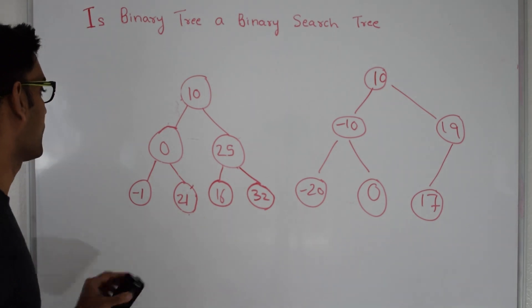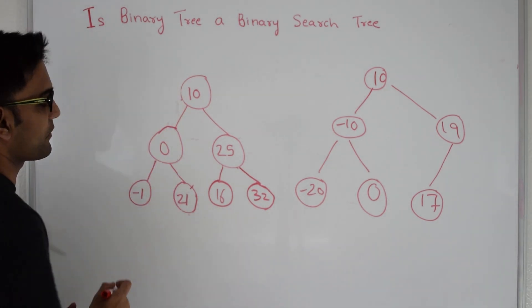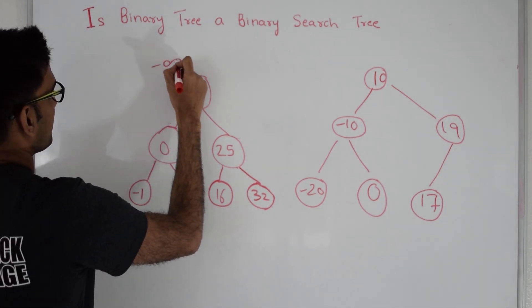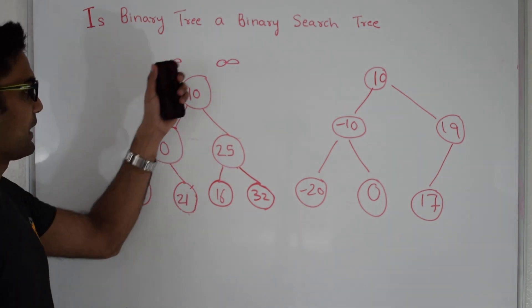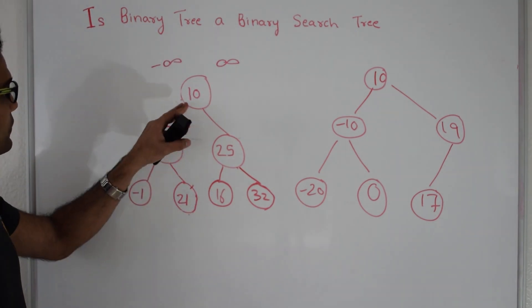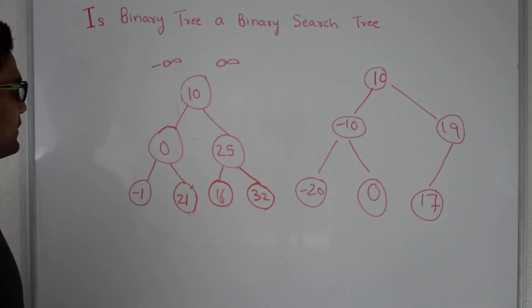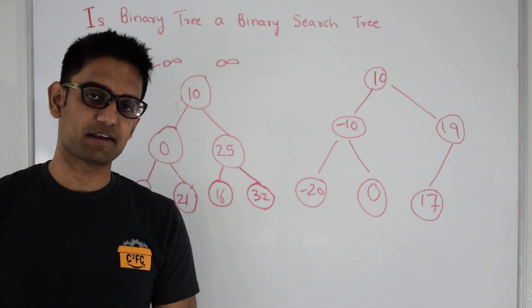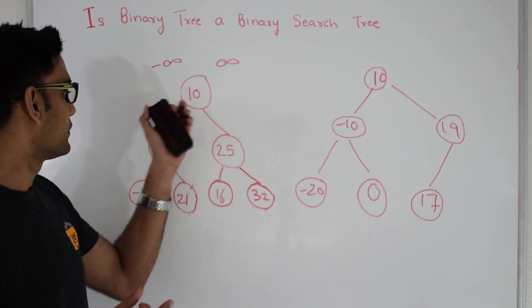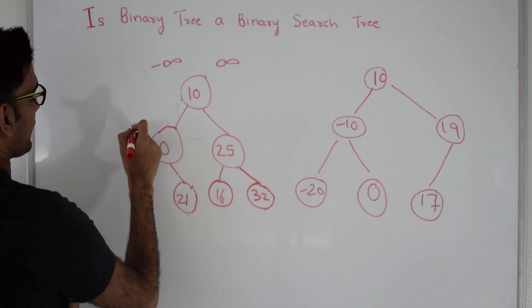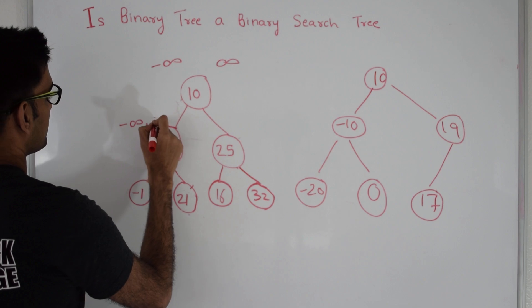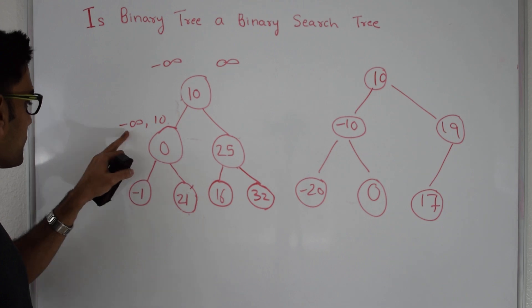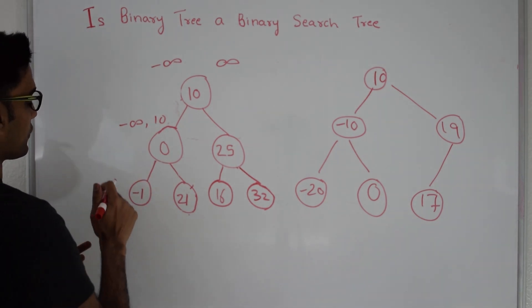Let's see an approach which actually works. We have a range for every node and we see if this node is in this range or not. We start with minus infinity and infinity for root — in code we'll replace this with integer min and integer max. So 10 is in the range of minus infinity to infinity. When we go to 10's left, everything on the left should be less than 10, so the upper bound when we go left is the root's value. So 10 says: my left child, you should be between minus infinity and 10.